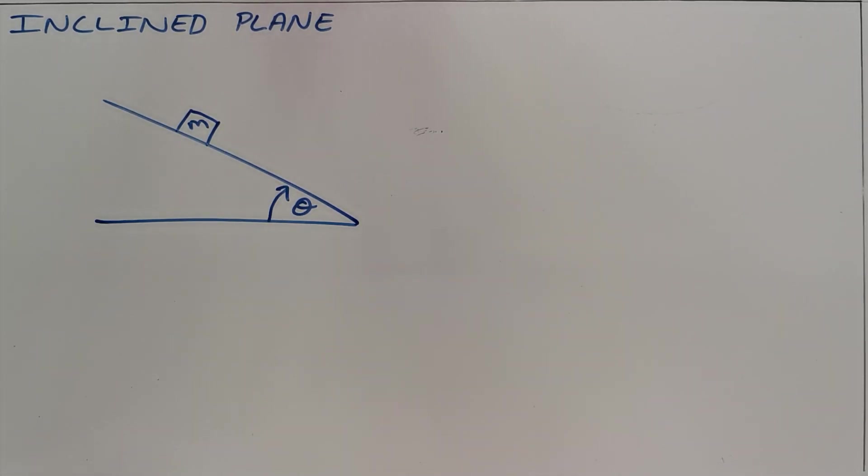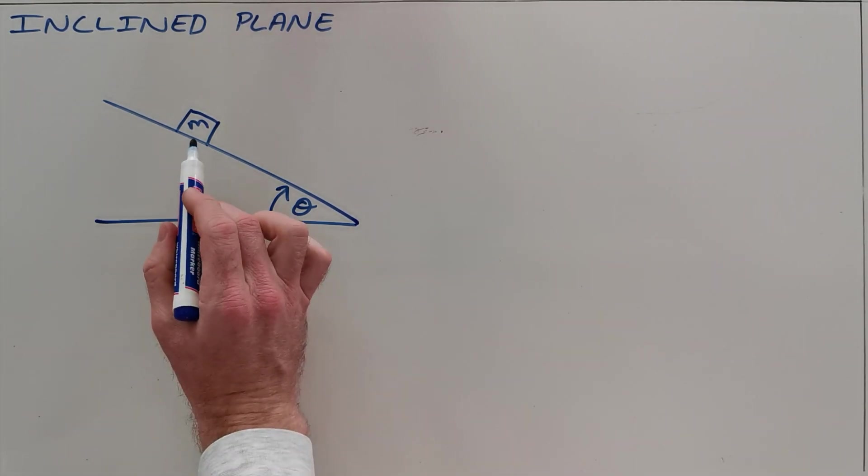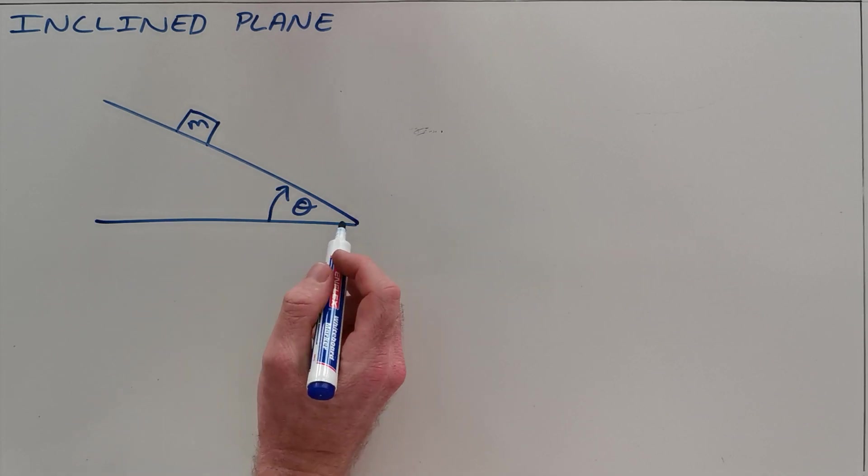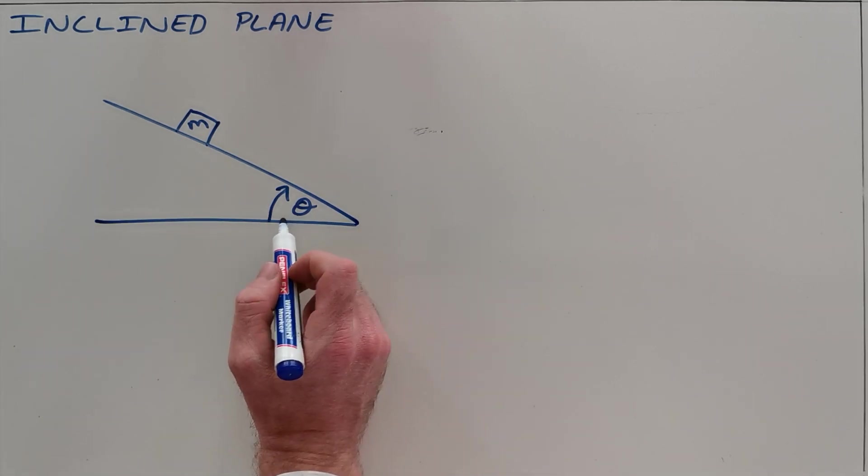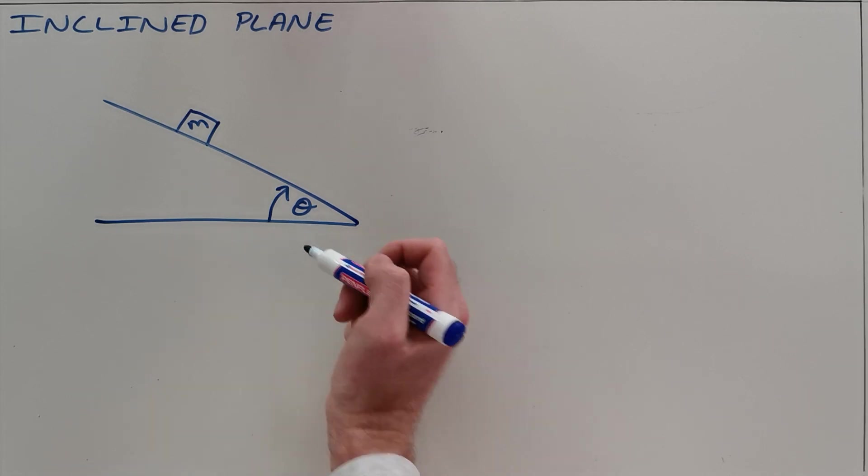The inclined plane is a problem that is commonly set up in some version of this format where you have an object with a mass m that is placed on a slope or an incline that is inclined to the horizontal at some angle theta.